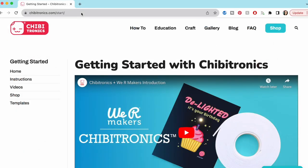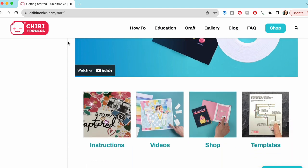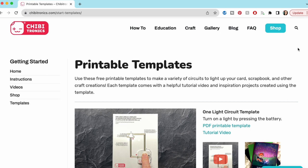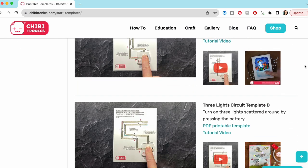If you visit Chibitronics.com slash start, you will find a resource page for our collaborative products with We Are Makers. At the bottom of the page or in the sidebar, you can click on the templates. This will open up a page with 6 free templates that you can use to create light-up circuits.